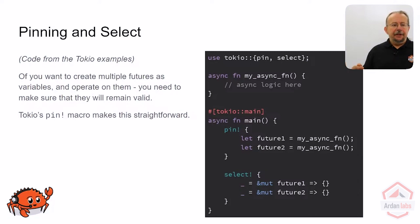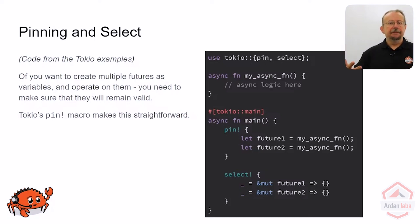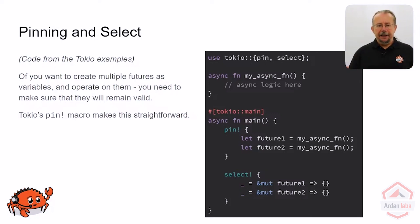The pin macro lets you ensure that whatever you've created in there, until it drops out of scope, is not going to move in memory. And so now you can safely select on both of them. Even though they're variables and not compile-time constants, they're not going to move. Select is fine, and you won't get really confusing error messages.